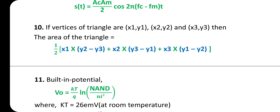Tenth one: If vertices of a triangle are (x1, y1), (x2, y2), and (x3, y3), then the area of the triangle is (1/2) × |x1(y2 − y3) + x2(y3 − y1) + x3(y1 − y2)|.